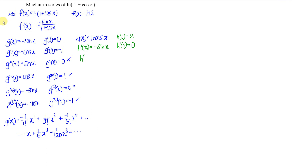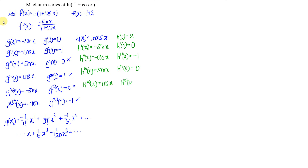Proceeding: differentiating sin gives cos, so the second derivative gives negative 1. The third derivative: negative times negative gives positive, so we get 0. The fourth derivative: cos again gives 1. The fifth derivative is 0. So we can stop here.